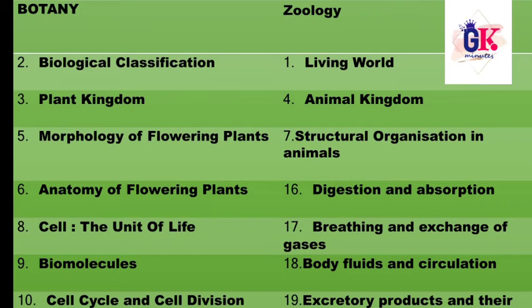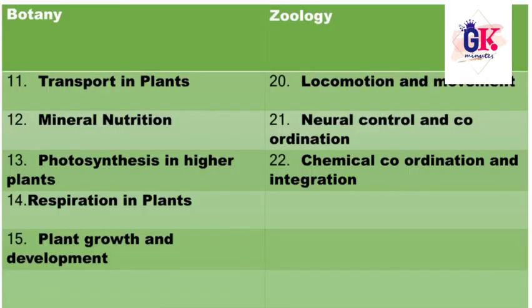In zoology, we study the 1st chapter, living world. The 4th chapter is animal kingdom. The 7th chapter is structural organization in animals. The 16th chapter is digestion and absorption. The 17th chapter is breathing and exchange of gases. The 18th chapter is body fluids and circulation. The 19th chapter is excretory products and their elimination.